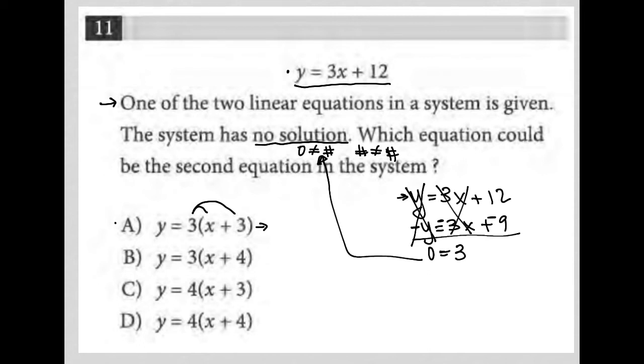0 does not actually equal 3, even though that's what we got as a result of doing the elimination method on the system of equations. So this is our answer. This is no solution. This is exactly what we expect to see when we have a system of equations that has no solution. So A is the correct answer.